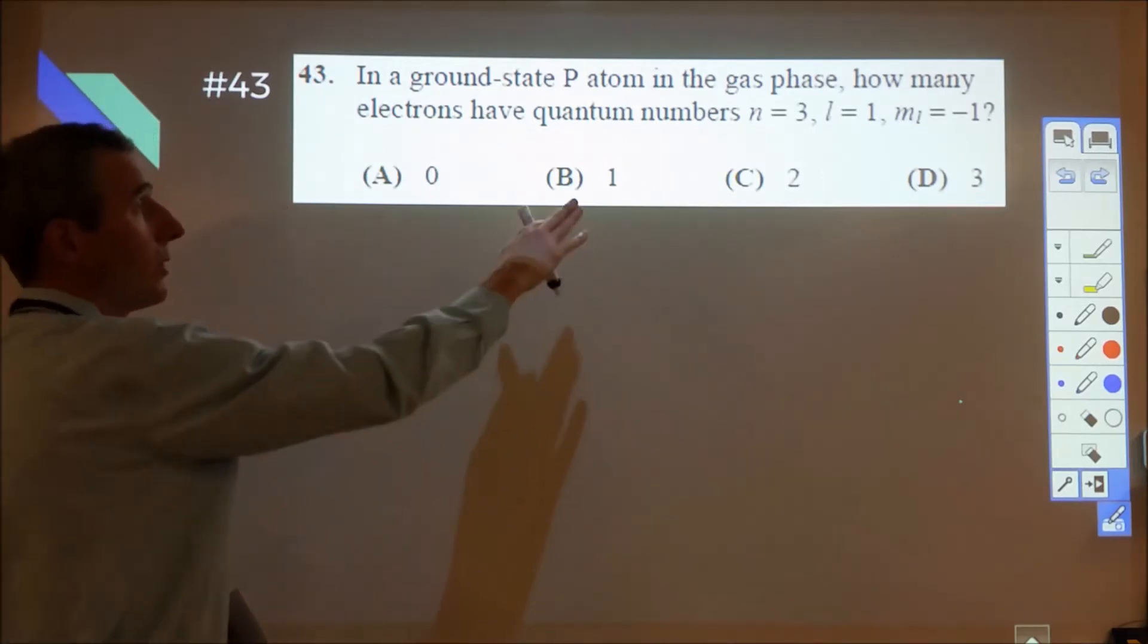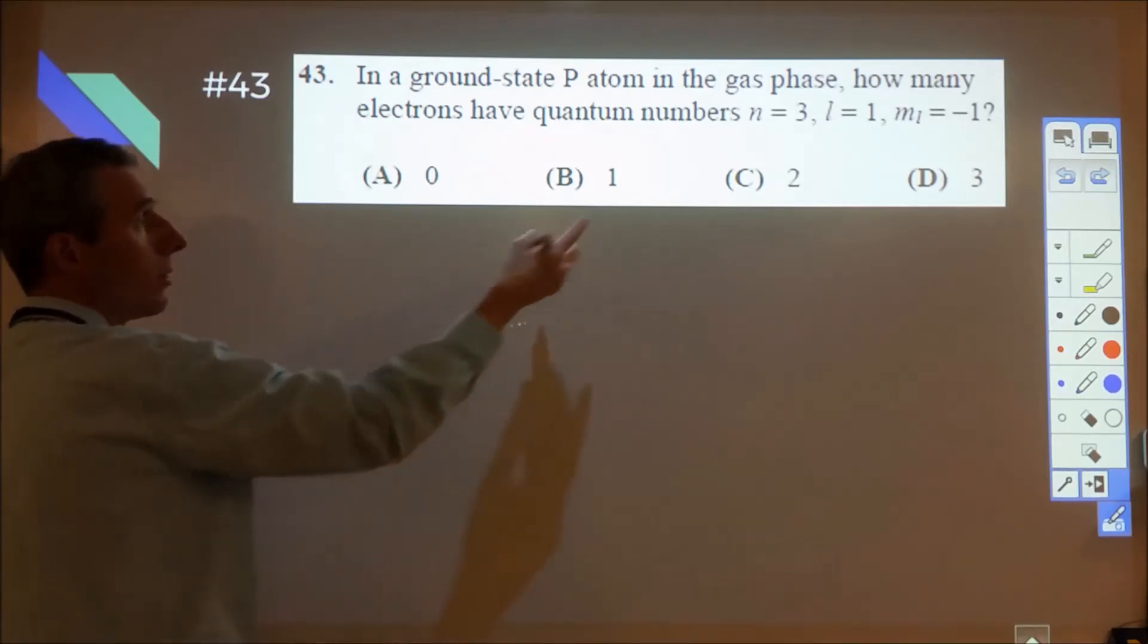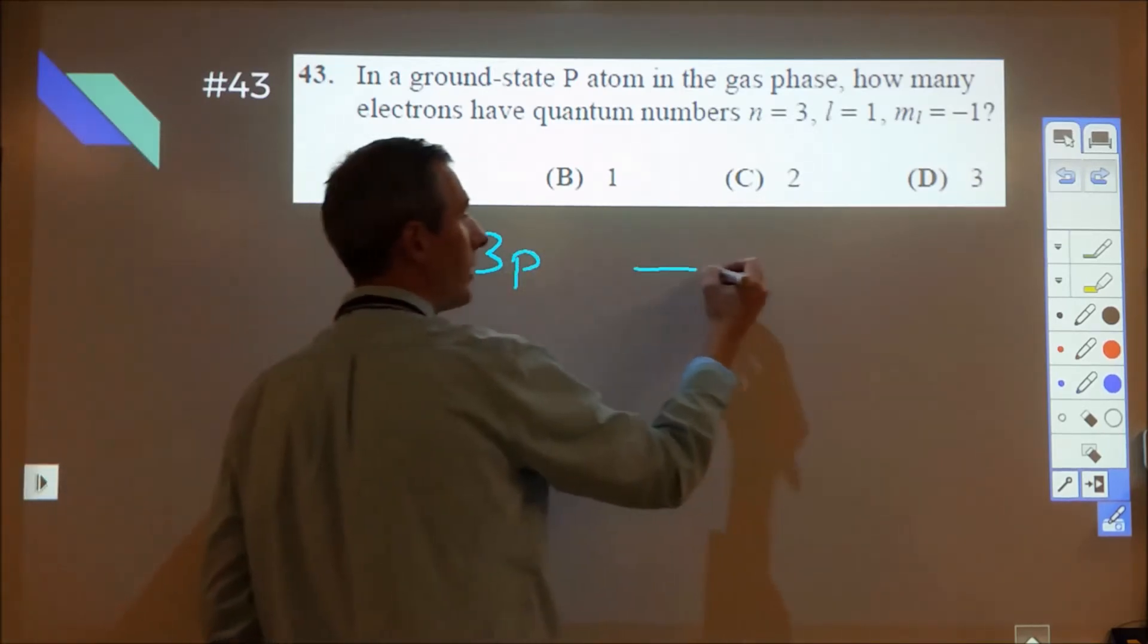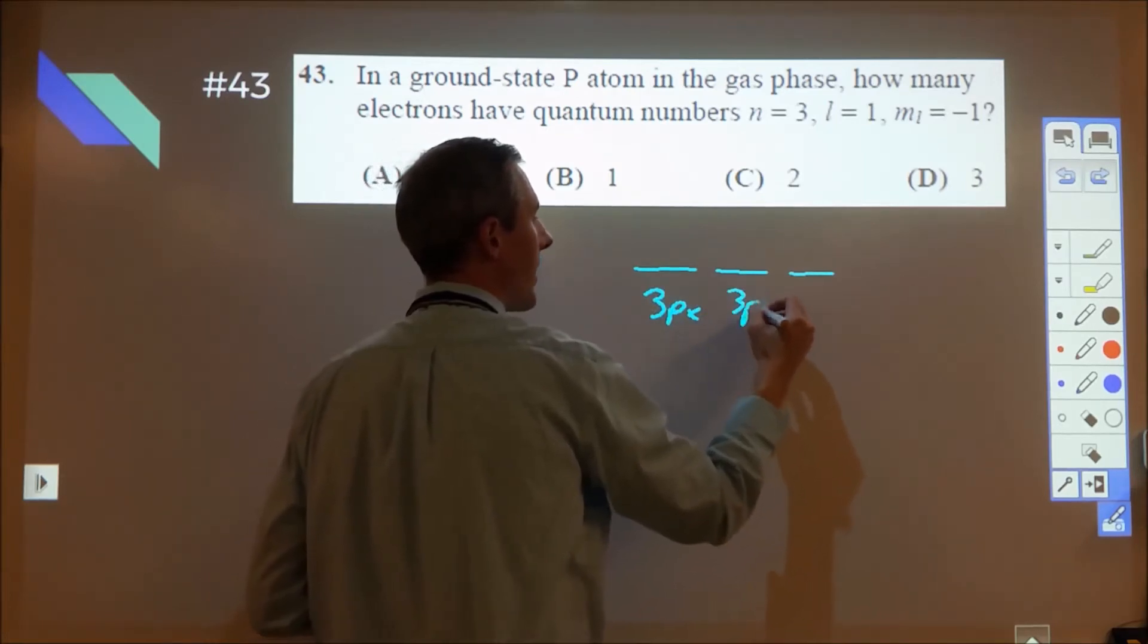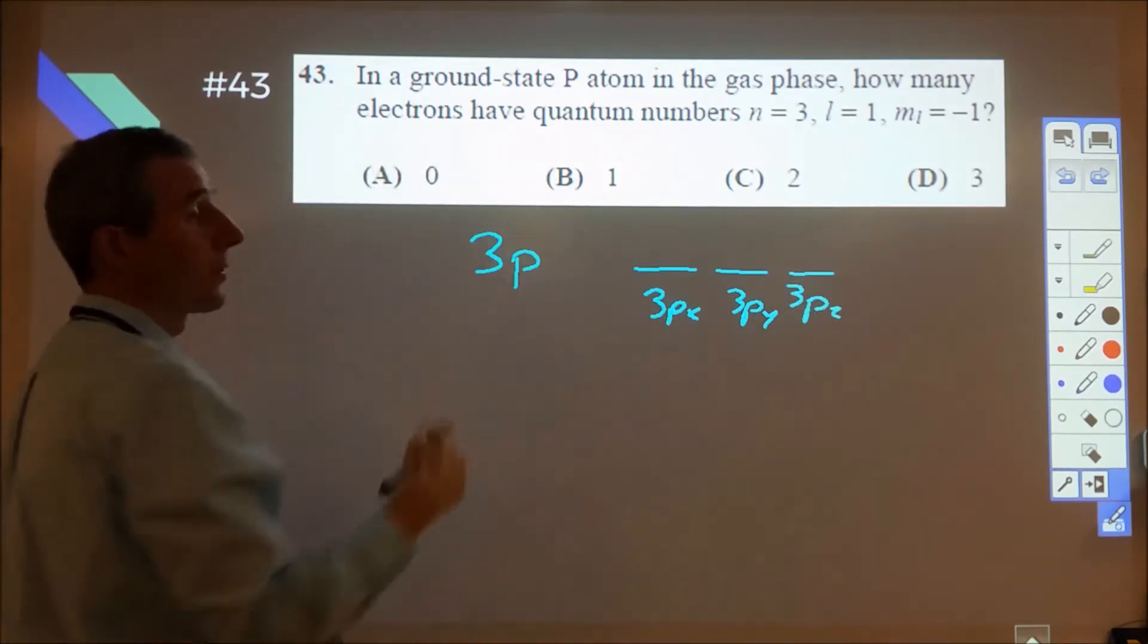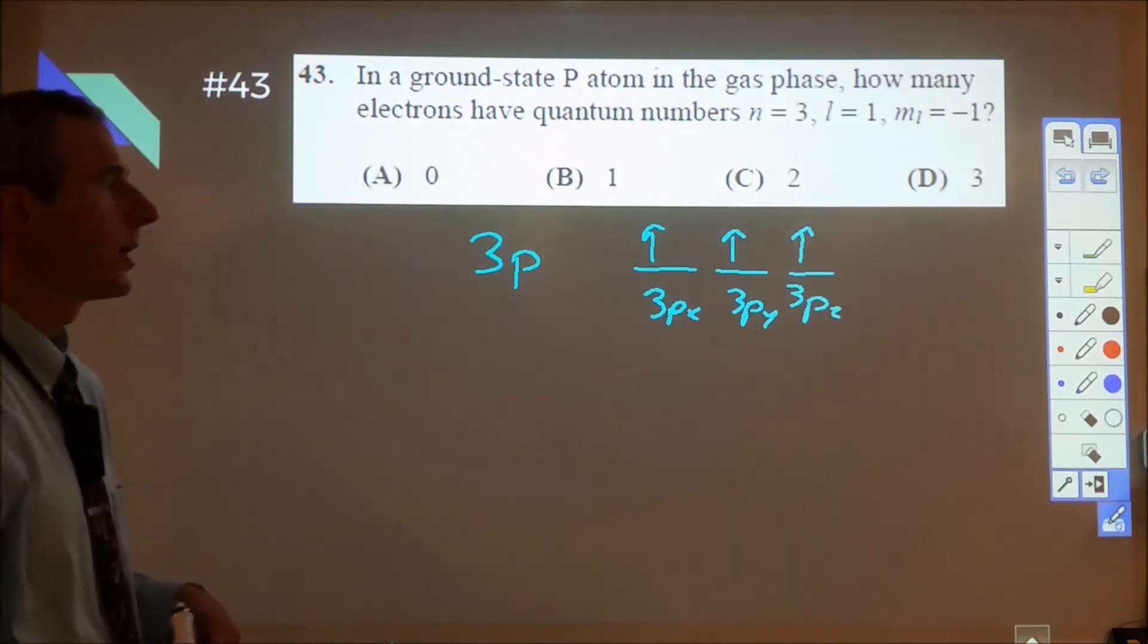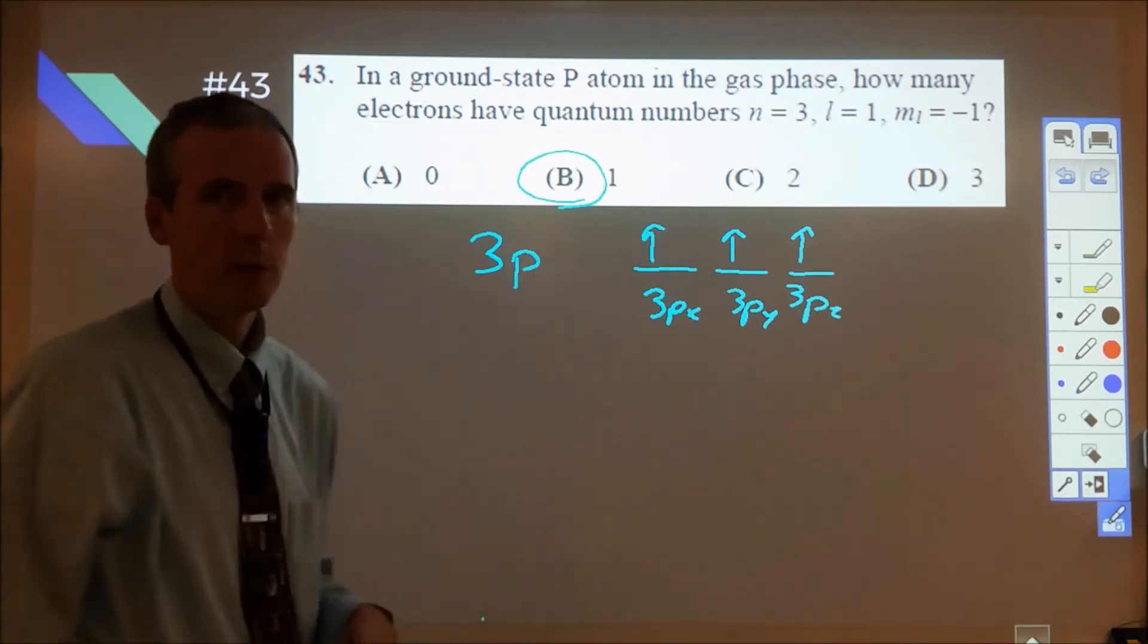Here we're looking at a phosphorus atom, and it wants to know for n=3, l=1, and ml=-1, how many electrons there are. So n=3 is the third energy level. l=1 means we're looking at a 3P electron. So we have three different 3P electrons. We have 3Px, 3Py, 3Pz. And for phosphorus, of course, we have 3P3. So we're going to have a single electron in each. Any one of those three could be ml=-1. It doesn't matter. They all have one electron, and therefore our best answer is B, one electron.